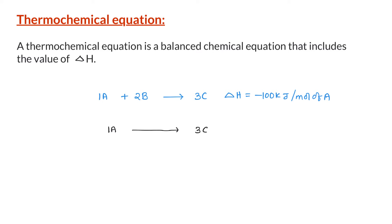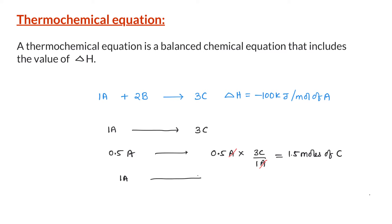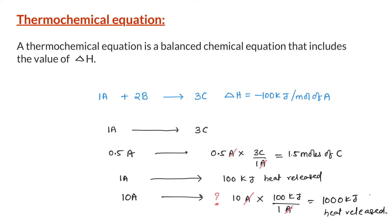For example, if we start with 0.5 moles of A, we would get 1.5 moles of C. We can do similar calculations with the enthalpy change as well. According to the balanced equation, for every mole of A consumed, 100 kilojoules of heat is released. So if 10 moles of A is consumed, how much heat will be released? The answer is 10 times as much heat, i.e. 1000 kilojoules.